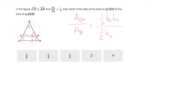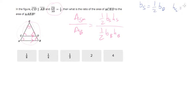We already know the ratio of the small to the big: CD over AB is one over two, so the big one is twice as big. This means base-small is one-half of base-big, and height-small is one-half of height-big — because no matter what we measure on those triangles, they'll always have a ratio of one-half.